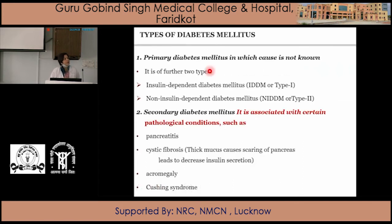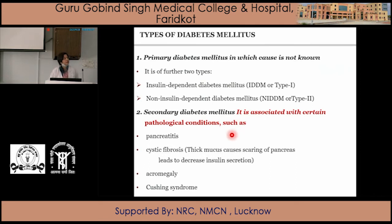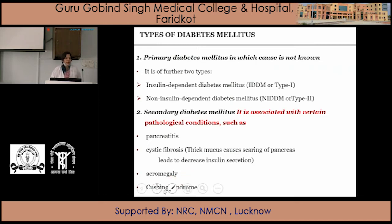Type 2 diabetes mellitus may be further divided into primary and secondary categories. Primary diabetes is of unknown cause, such as Type 1 IDDM or Type 2 NIDDM. Secondary diabetes mellitus is associated with certain pathological conditions such as pancreatitis, cystic fibrosis where thick mucus causes scarring of the pancreas reducing insulin secretion, acromegaly due to excess growth hormone, and Cushing's syndrome where excess cortisol precipitates diabetes. There is also gestational diabetes, also known as pregnancy-induced diabetes mellitus.